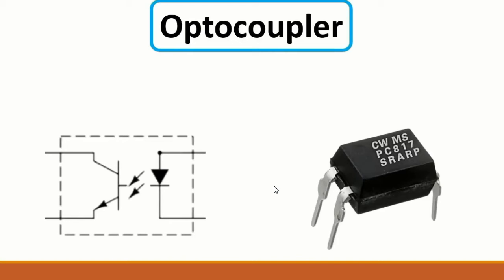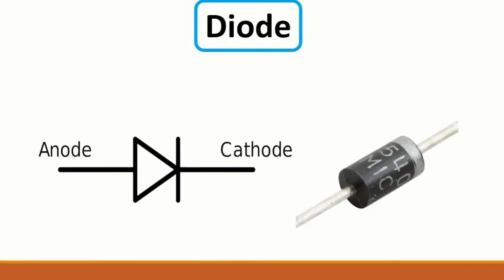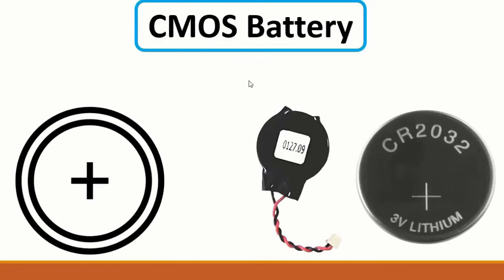You can search for 'optocoupler' or 'optoisolator' in the channel videos. Then we have the diode - the marked side is the cathode and the other is the anode. The diode allows current to pass in only one direction, from anode to cathode, and is also used for protection.